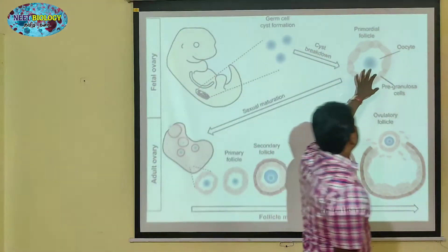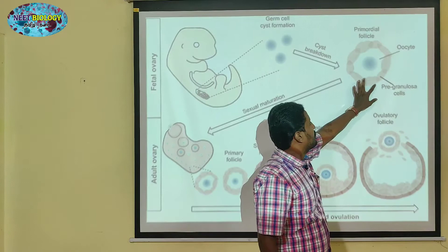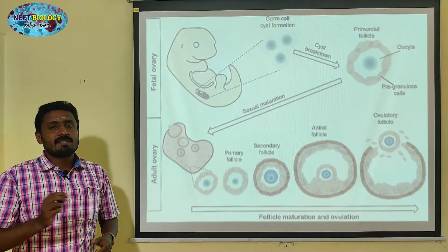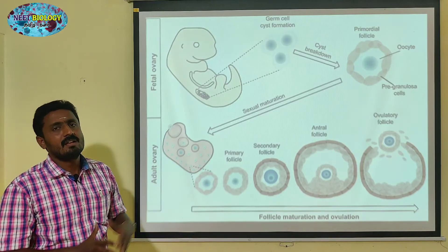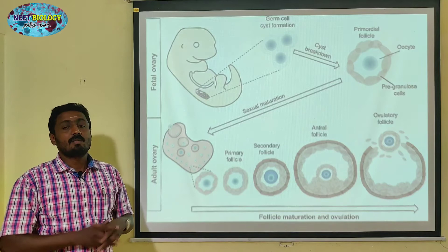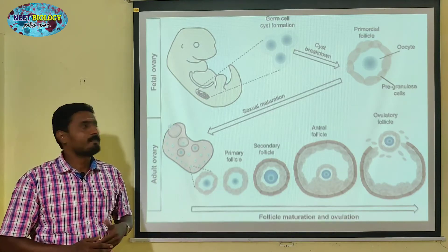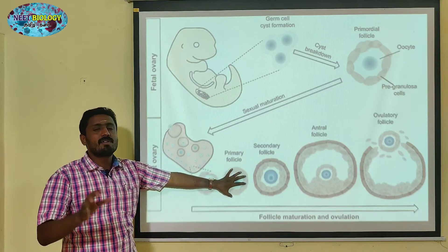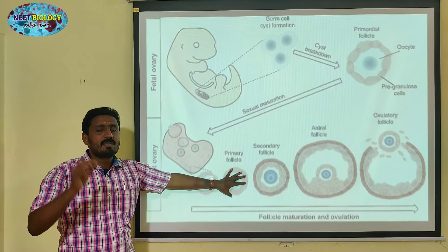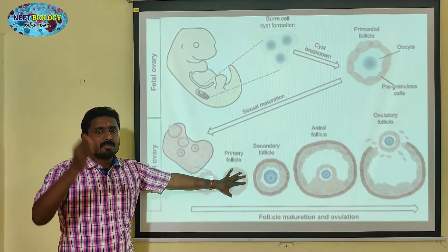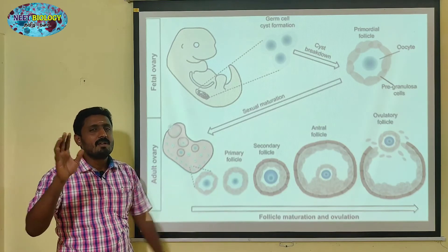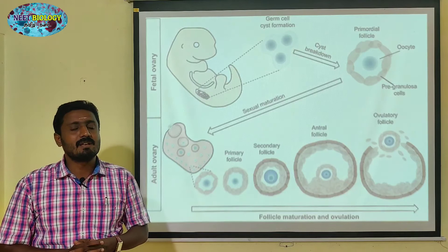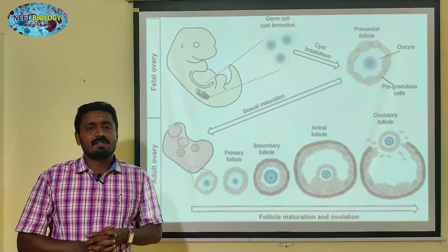This is the primary follicle, and these are the pre-granulosa cells. The granulosa cells are developed, and the primary follicles are formed. When you look at the menstrual cycle starting, the primary follicles consist of a primary oocyte — each primary follicle consisting of one primary oocyte. You can see the primary follicles in the ovary during the menstrual cycle starting of a female child.